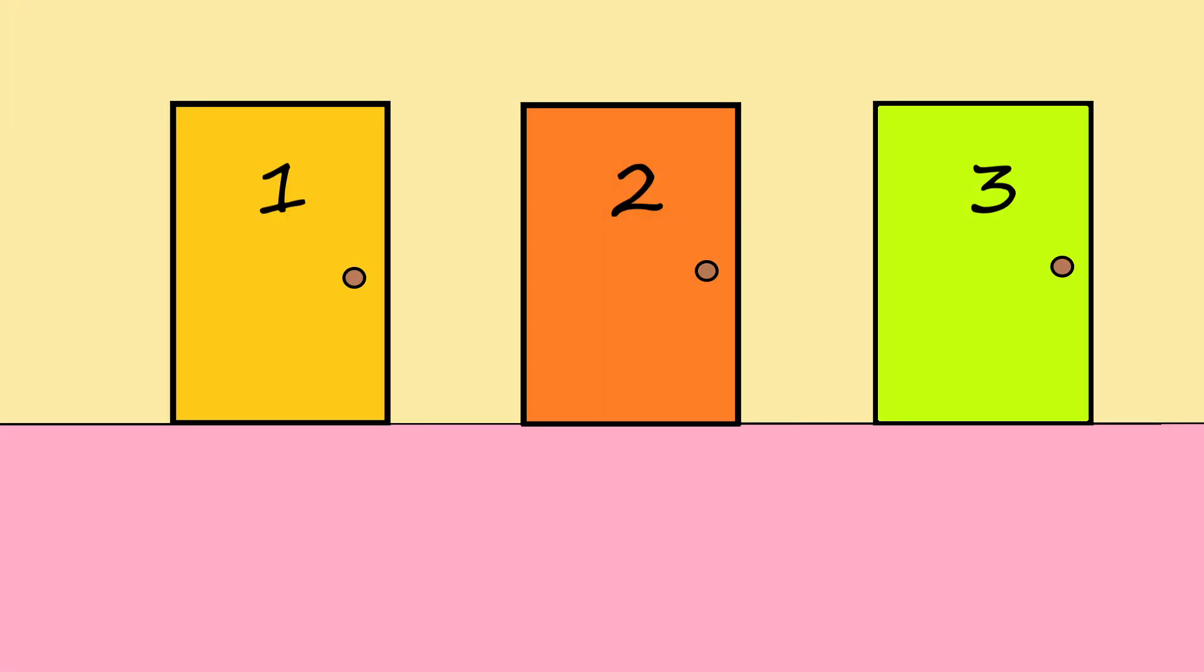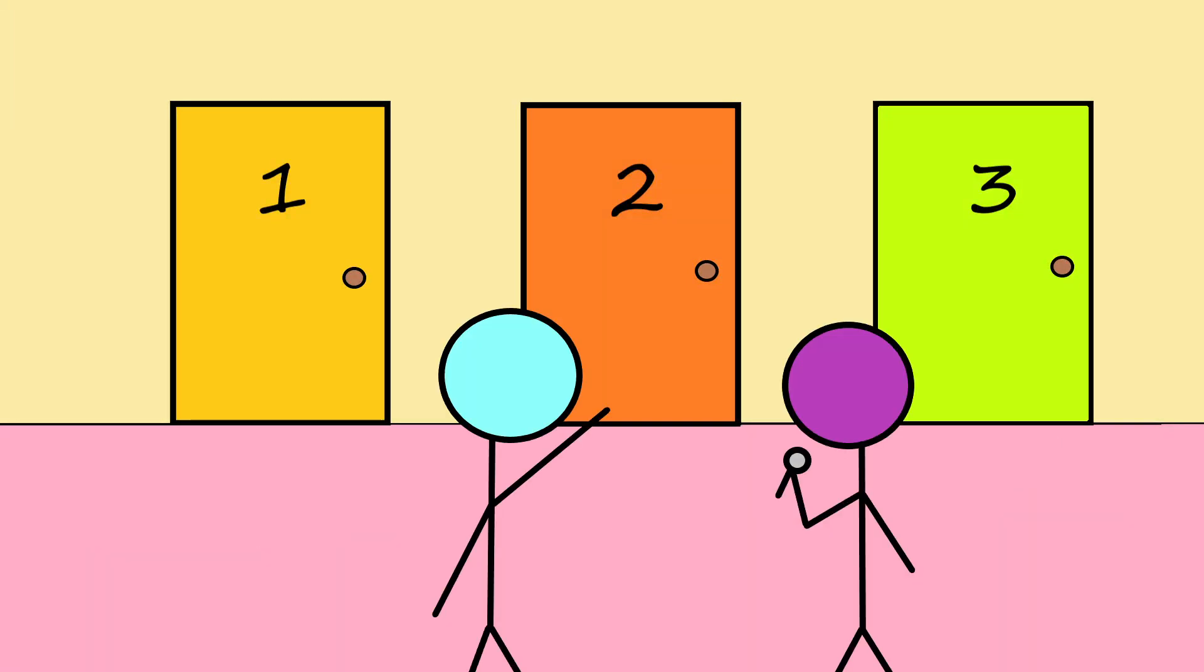Next, consider a game show where you can pick one of three doors. One door has a prize behind it, but the other two doors have junk. If you pick one of these doors, you have a one-in-three chance of having selected the door with the prize.